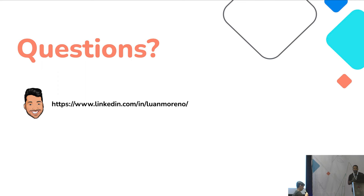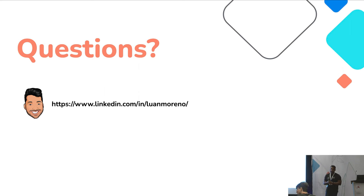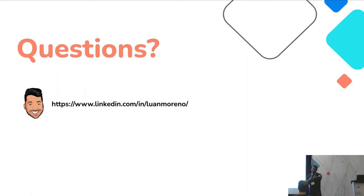Awesome, thank you Luan. I think we have some time for a couple of questions. Just raise your hand and I'll bring a mic to you. So usually when you execute dbt run, it takes some time to parse all the models and then actually execute them. Does Cosmos, in every task, use dbt run with a single model? And if so, doesn't that add some time to the execution?